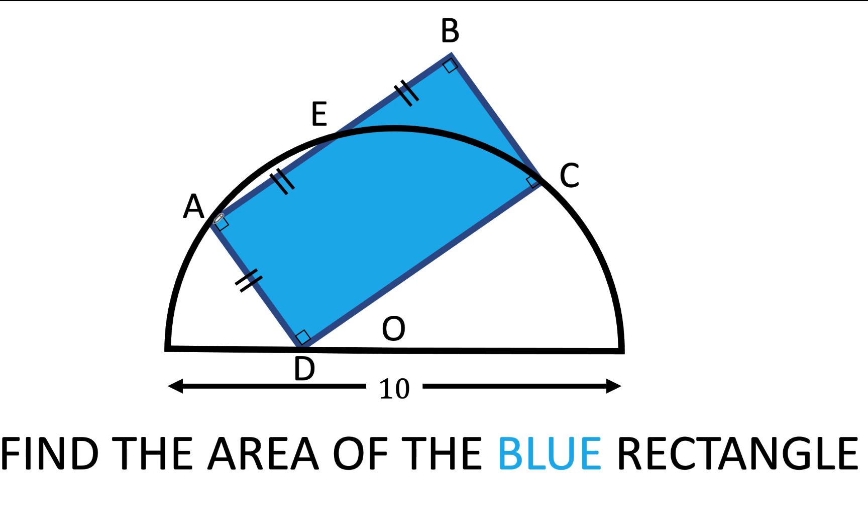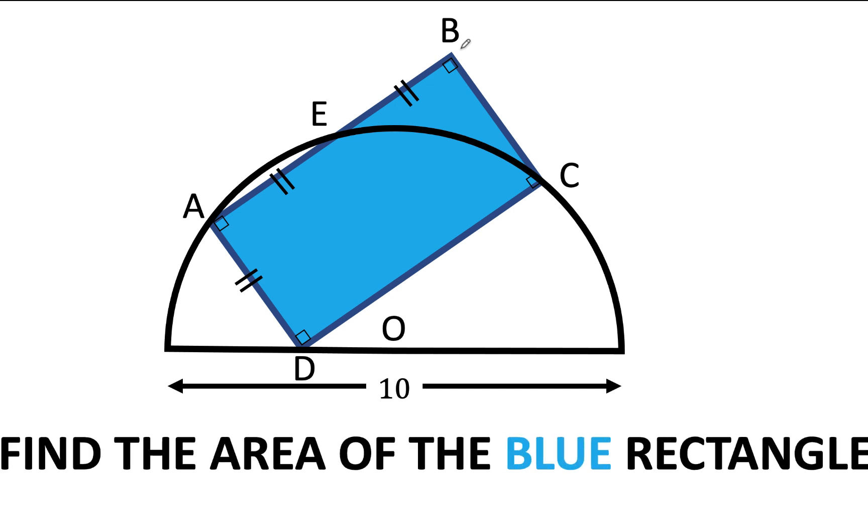Furthermore, it is given that the length of side AD is equal to the length of segment AE, which is also equal to the length of segment EB. We would like to find the area of this blue rectangle. You can pause the video and try if you can solve this beautiful geometry problem.